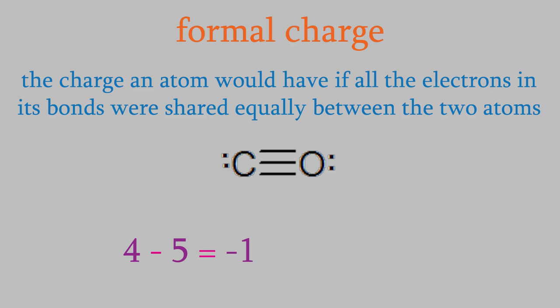Now we'll do the same for the oxygen. Like the carbon, the oxygen has two electrons in the electron pair and three in the bond, for a total of five. Oxygen has six valence electrons, so the formal charge is six minus five, or positive one.